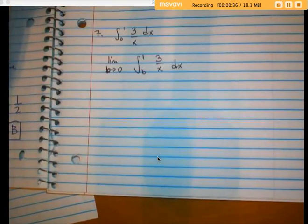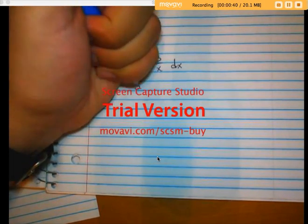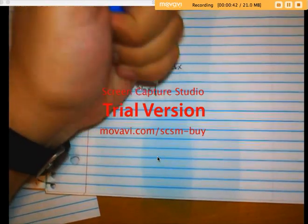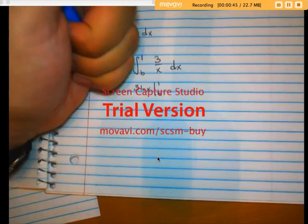...of 3 over x dx. Okay, I could have used a lot of things. Here we go: 3 natural log of x from b to 1, and I'm taking the limit.